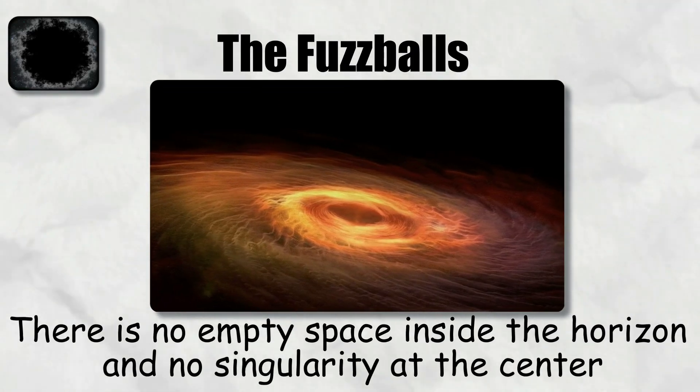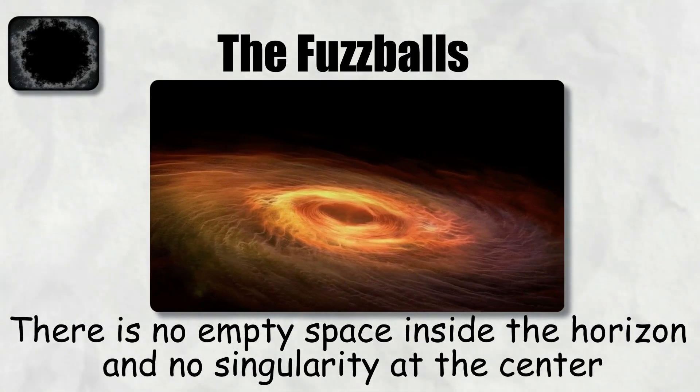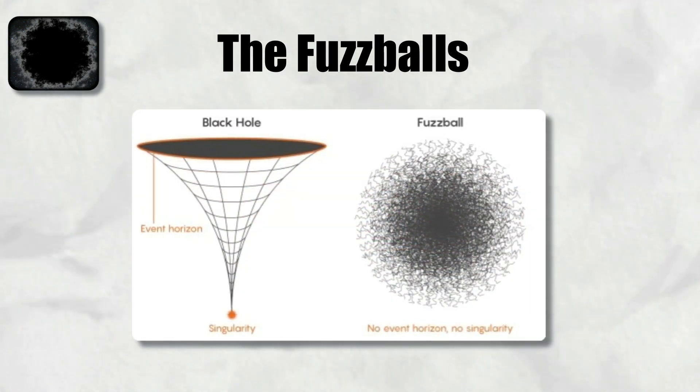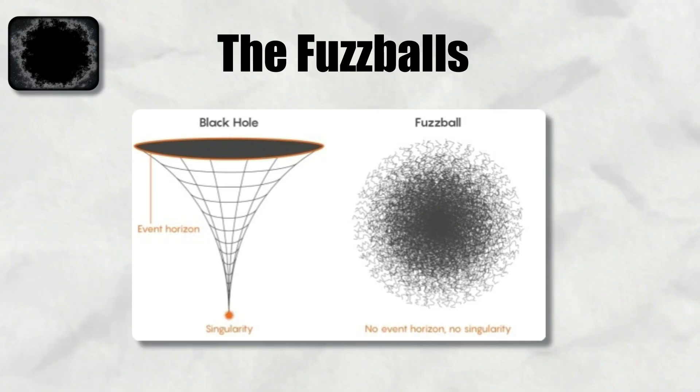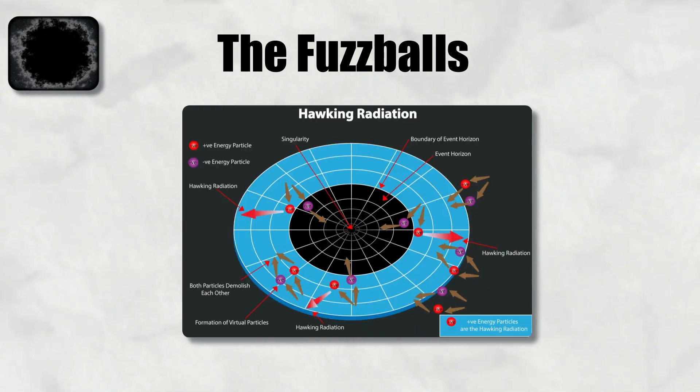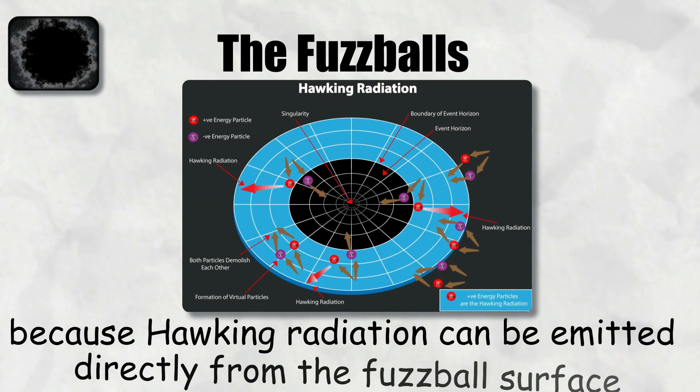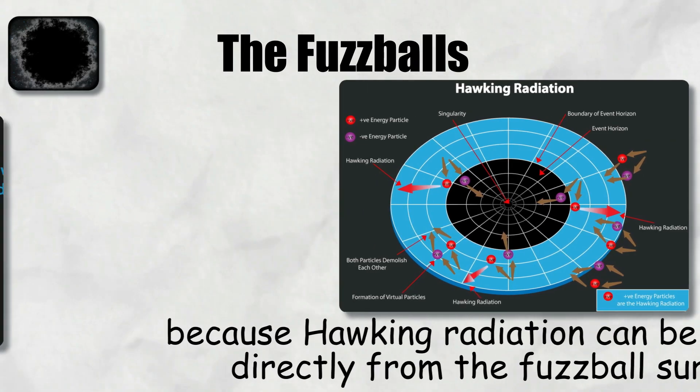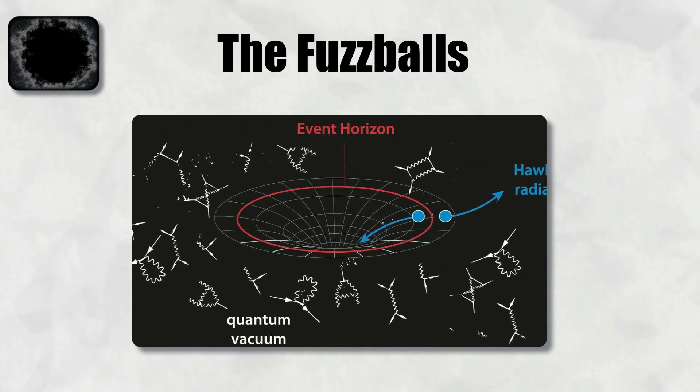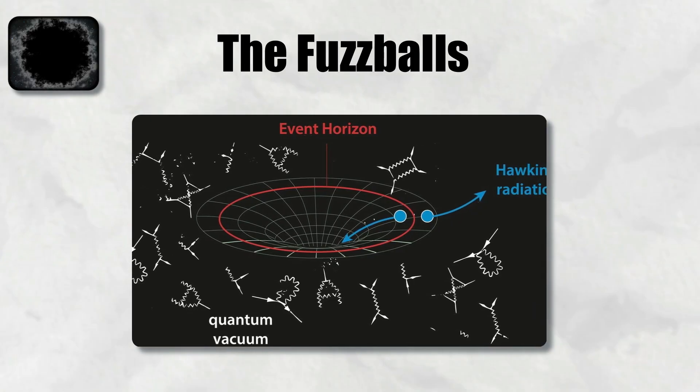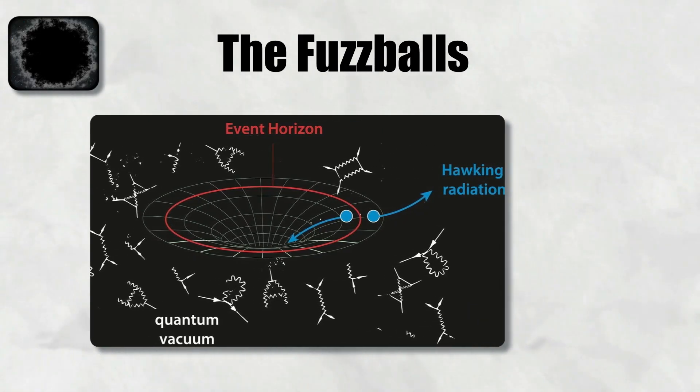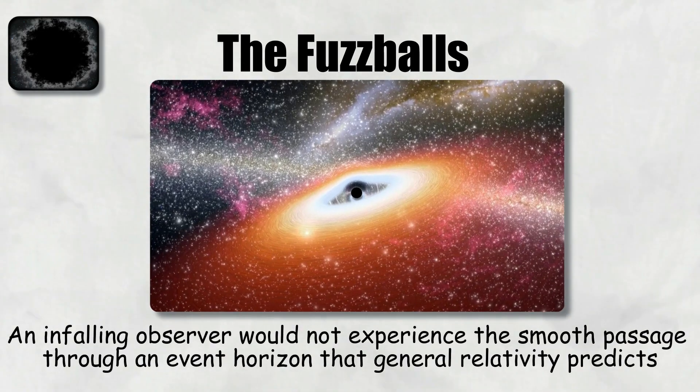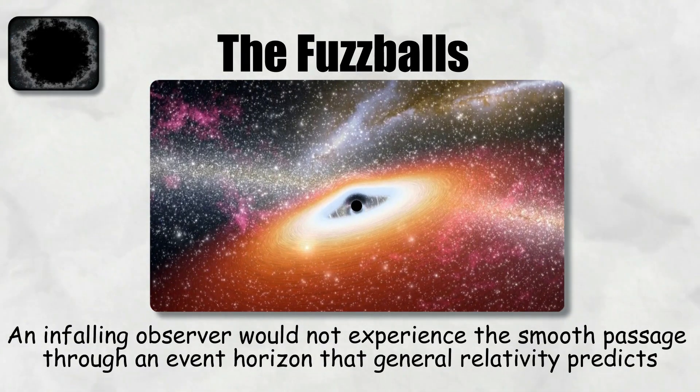According to the fuzzball proposal, there is no empty space inside the horizon and no singularity at the center. Instead, the entire region is filled with tangled strings and branes forming a fuzzy object roughly the size of the horizon radius. This eliminates the paradox of information loss, because Hawking radiation can be emitted directly from the fuzzball surface. Instead of being perfectly thermal, the radiation can carry subtle correlations that encode the information about the state of the fuzzball.